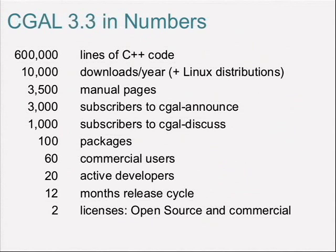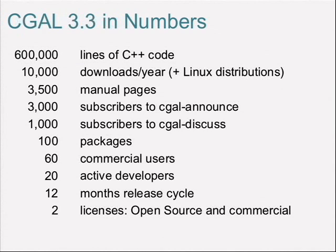As of the current public release 3.3, this is a pretty large C++ project: about 600,000 lines of code. It gets downloaded 10,000 times a year, plus it is part of some major Linux distributions. The manual is extensive at 3,500 pages. There are a few thousand subscribers to the announcement and discussion mailing lists. The library is not monolithic — it's a collection of roughly 100 packages for individual data structures and functions. There are now 60 commercial customers and about 20 active part-time developers. We try to issue one release a year.